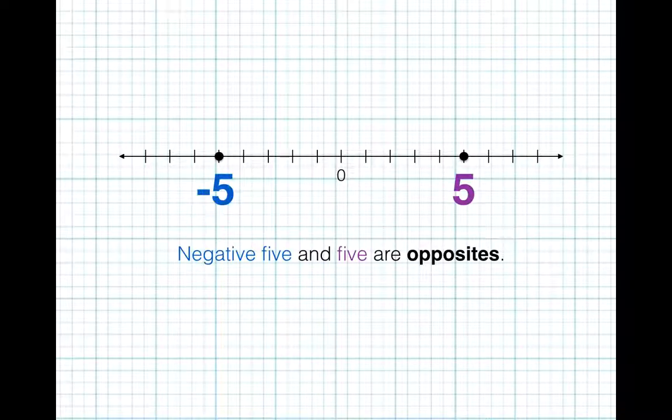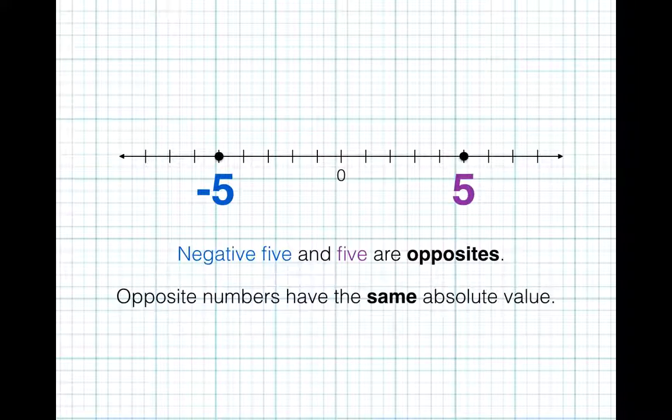We say negative 5 and 5 are opposites. Opposite numbers have the same absolute value.